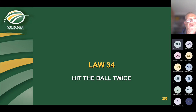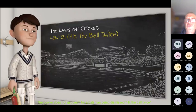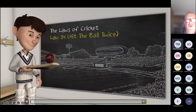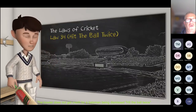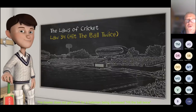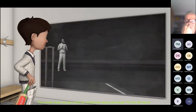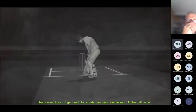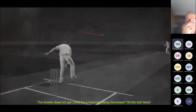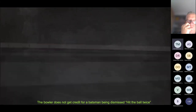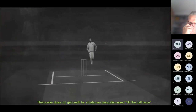The next mode of dismissal is hit the ball twice. The striker is out hit the ball twice if, while the ball is in play, it strikes any part of his person or is struck by his bat and, before the ball has been touched by a fielder, he willfully strikes it again with his bat or person. The key word is willfully — inadvertent double strikes don't count.